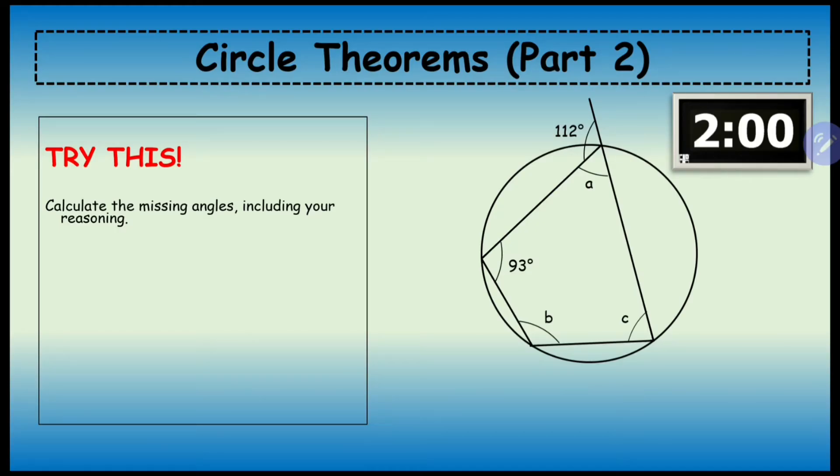Okay, let's have a look at this in an actual question. Calculate the missing angles including your reasoning. Let's start with angle a. Angle a is on a straight line with an exterior angle of 112 degrees, so we should be able to easily work that out to be 68 degrees.